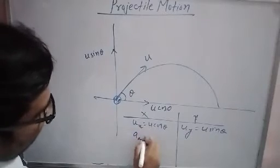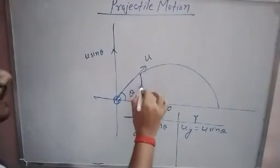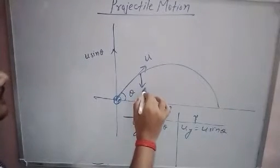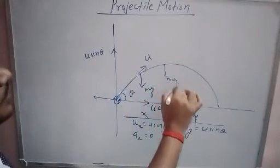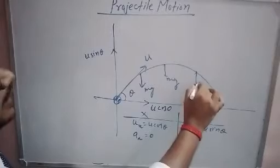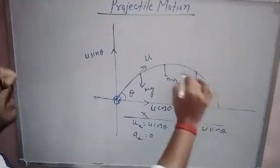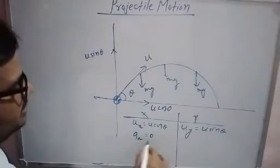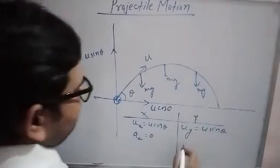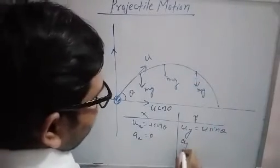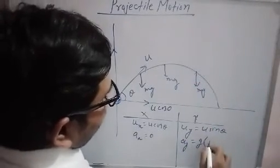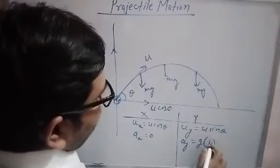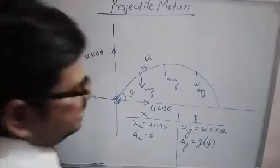Acceleration along the x-axis is 0, because only one force is acting at all times, which is the force of gravity, g, which is downward. So it has no component in the horizontal direction. Therefore, acceleration along the x-axis is 0, and acceleration along the y-axis is g, which always acts vertically downward.